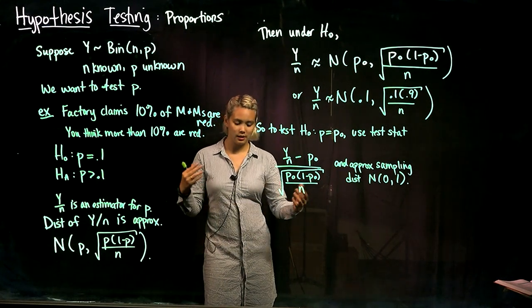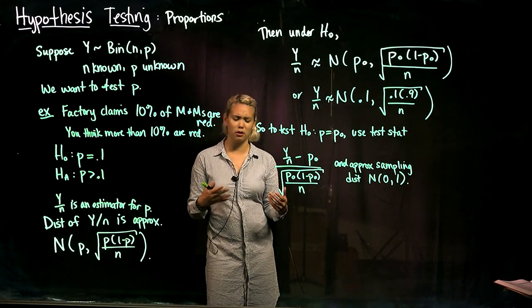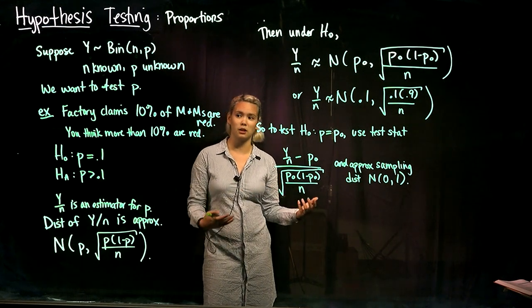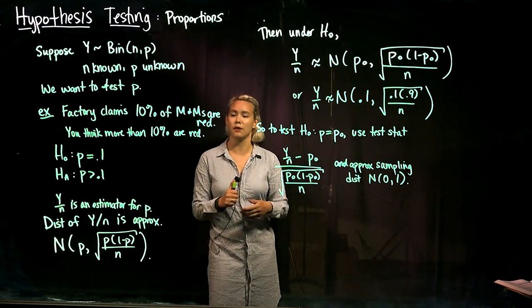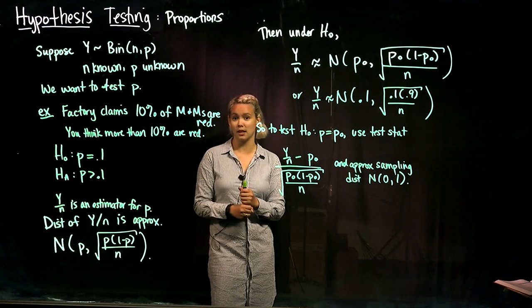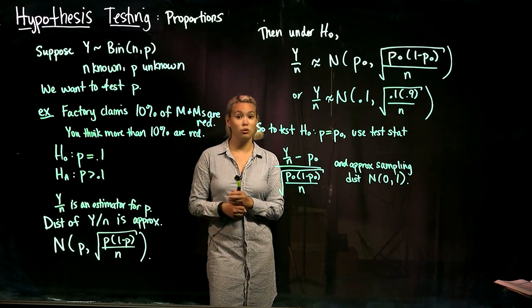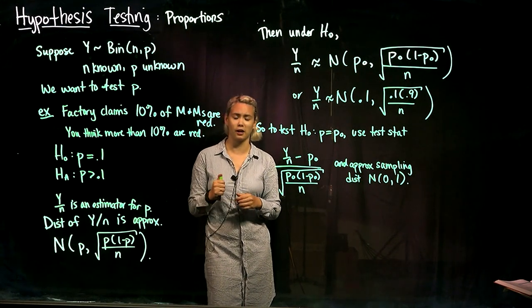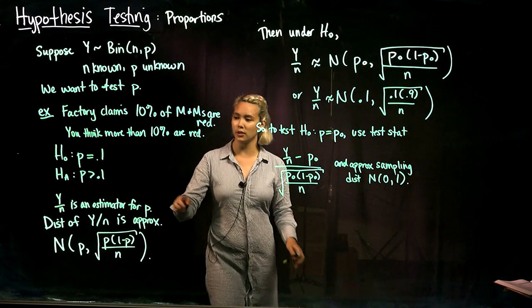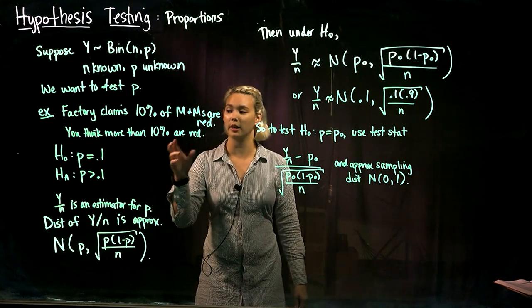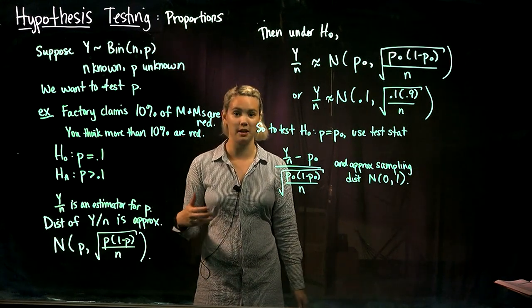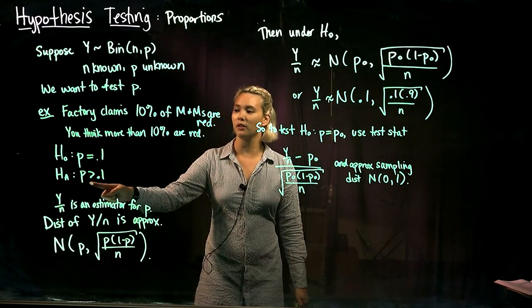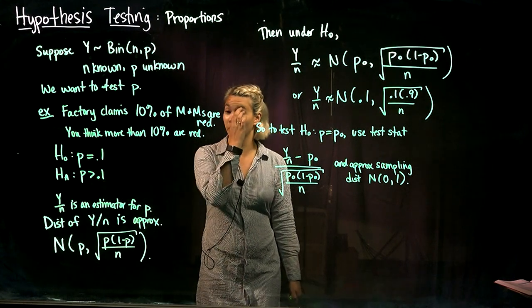For example, say you like eating M&Ms and you eat a lot of them, and you notice it seems like there are more red M&Ms than the factory claims. Maybe the factory claims that 10% of M&Ms are red. You think more than 10% are red, so you want to test the M&M factory's claim. Your null hypothesis is what the factory claims: p equals 0.1, where p is the probability of a red M&M. The alternative is what you think: p is greater than 0.1.